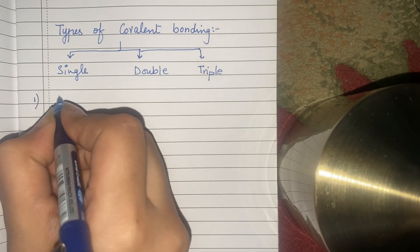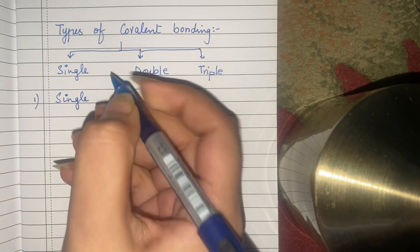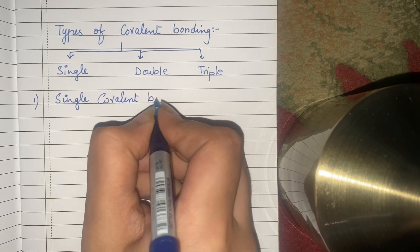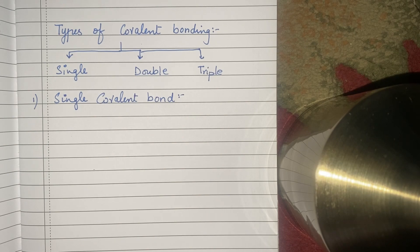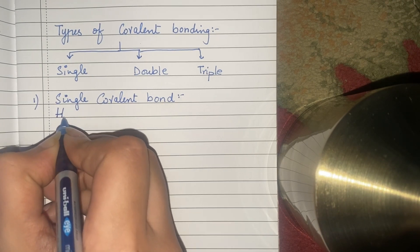Starting from the first type, which is single covalent bond. In single covalent bond, only one electron is shared by each atom. That means each atom shares its one electron in order to attain the stable outermost electronic configuration. Each atom will share its own electron. Let us see an example of single covalent bonding.